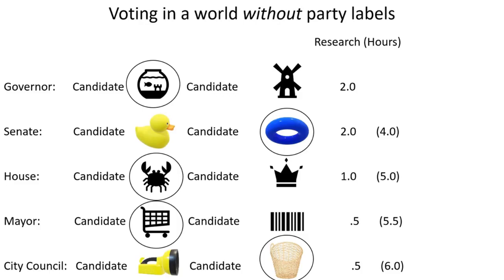This is what voting is like in a world without party labels. And in the next election, all the research they did in this election isn't going to help them — they're going to have to start all over again, unless those same candidates run again. If the same candidates don't run again, they're back to square one.